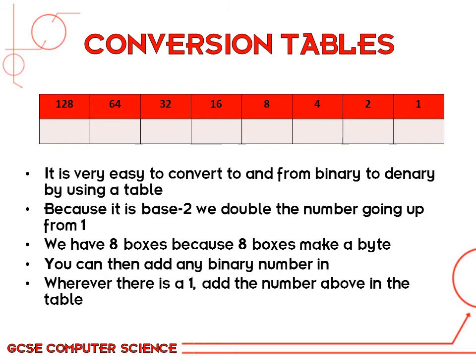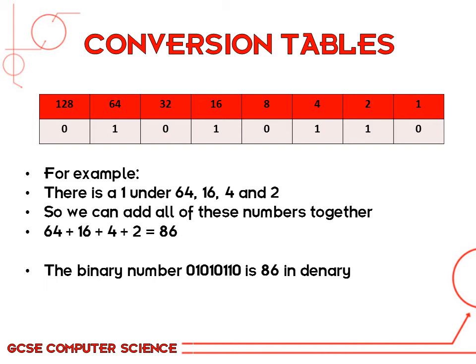Go ahead and draw this table on a piece of paper now. Here we can do a worked example. You can write in the number 01010110 into your table. Using your calculator, for now until you get used to the process, add up the numbers wherever there's a 1 in your table. For example, there's a 1 underneath 64 and a 1 underneath 16, so you would add up 64 and 16. You carry on doing this for all of the others where there's a 1. For this particular example, it would be 64 plus 16 plus 4 plus 2, which comes to 86. So the binary number 01010110 is 86 in denary.